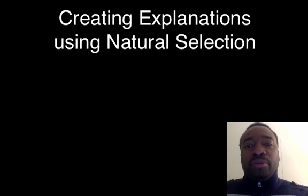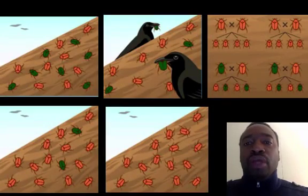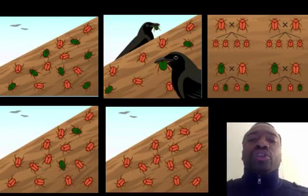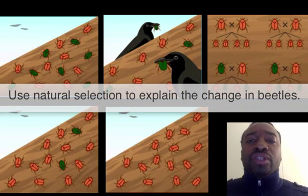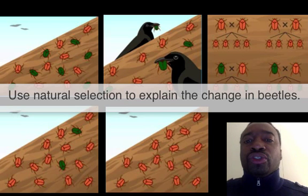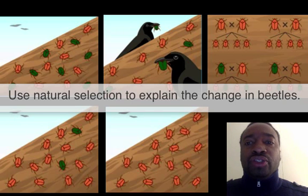Let's do another example. Let's see if we can look at another example of natural selection. Looking at these images, I want you to come up with an explanation for what's going on using this idea of natural selection. I want you to talk about what's the variation, what's the trait that's being inherited, and all the other requirements of natural selection.